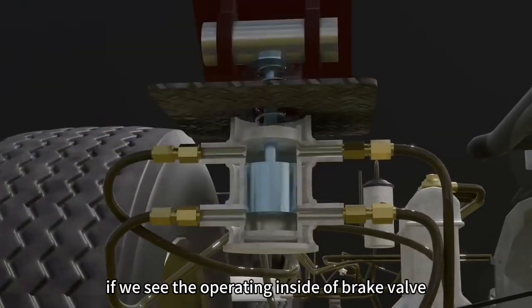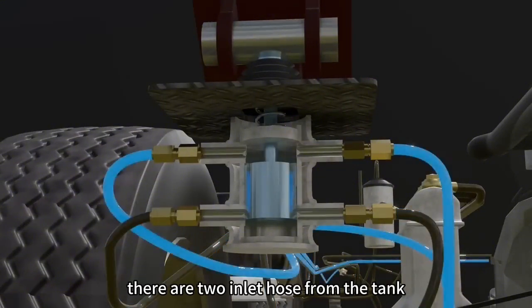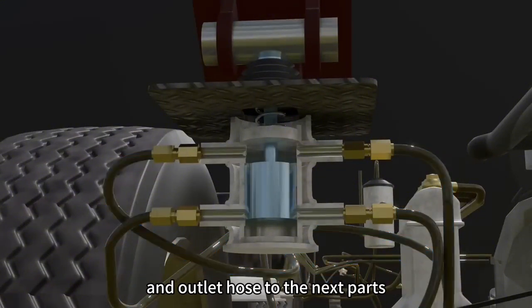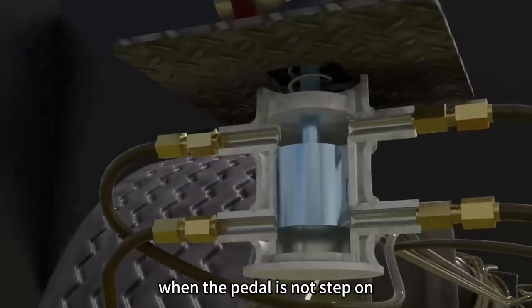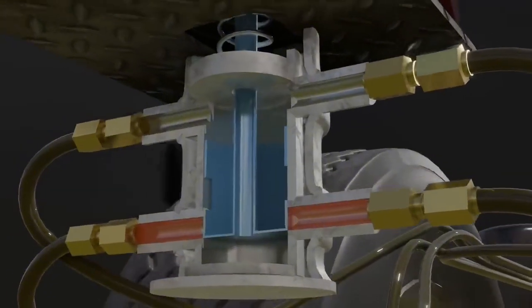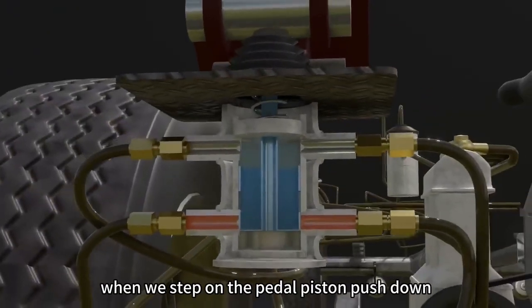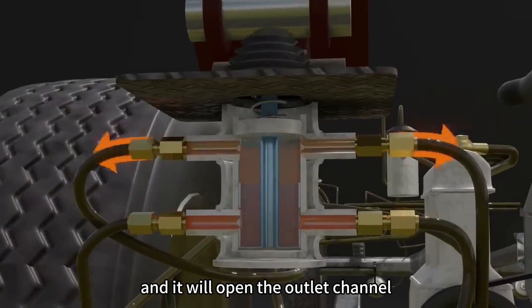If we see the operation inside of brake valve, here's the mechanism. There are two inlet hoses from the tank and outlet hose to the next parts. When the pedal is not stepped on, the piston surface will close all inlet channels. When we step on the pedal, piston is pushed down, and it will open the outlet channel.